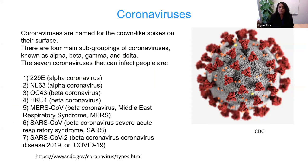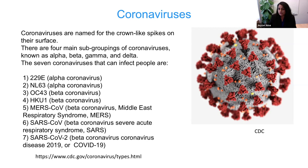There are four main subgroups: alpha, beta, gamma, and delta. There are seven coronaviruses that can infect people. We will be talking about SARS-CoV-2 in this talk, which is the causative agent of COVID-19.